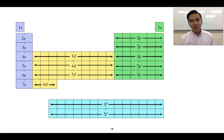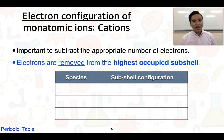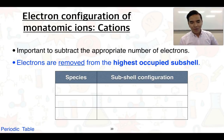Let's start off with cations. A few key points to keep in mind: if we are given the charge, it's important to subtract the appropriate number of electrons from the original atom, and these electrons are removed from the highest occupied subshell. That's a very key thing to keep in mind.